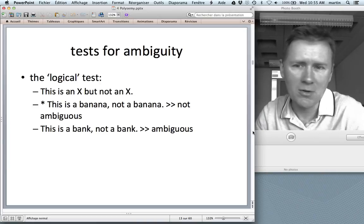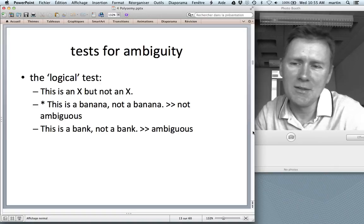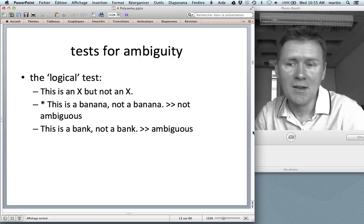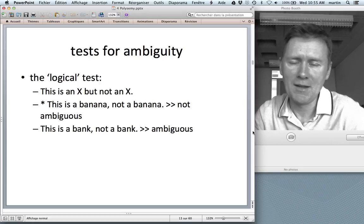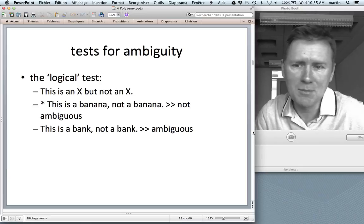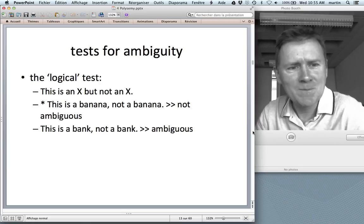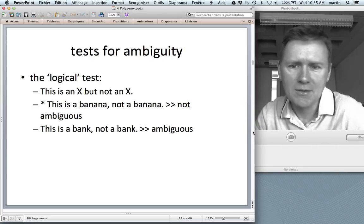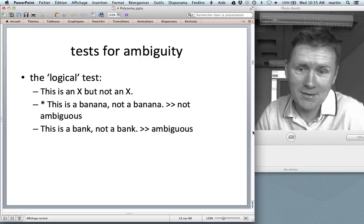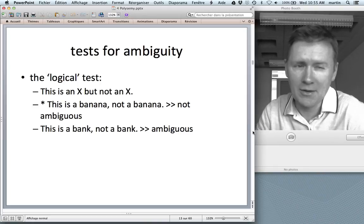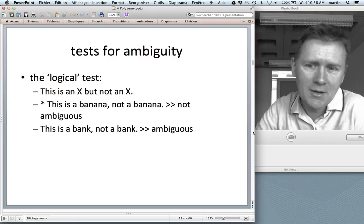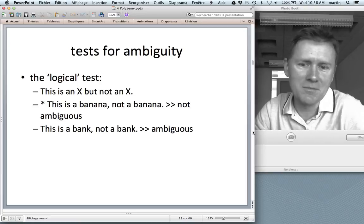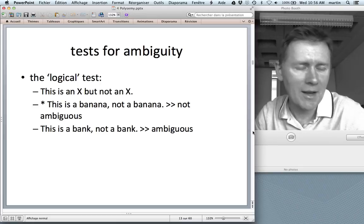So one test is the so-called logical test where you insert the candidate word into the sentence. This is an X, but not an X. If you do that with unambiguous, monosemous words, then you get a slightly odd sentence that is semantically difficult to interpret. So if I say this is a banana, not a banana, you think that, well, he was always a bit strange, but now he's gone over the edge, I think. So this is a banana, not a banana is hard to interpret in a literal way. However, if I say, well, this is a bank, not a bank, you get the sense that, okay, he's probably talking about the furniture bank and the financial institution bank or about the river bank and the financial bank. So there's a way to interpret the sentence. And this tells you that the item bank is ambiguous.